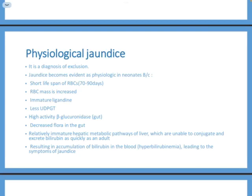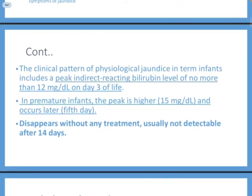Onset is very important. Jaundice in the first hours of life requires ruling out pathological causes. In term babies, physiological jaundice peaks around day 3, rarely exceeding 12–15 mg/dL. In premature babies, the peak is higher — around 15 mg/dL — and is more delayed, occurring around day 5 and lasting longer. Most physiological jaundice resolves by week 2; however, breast milk jaundice can persist up to 1 month of age.